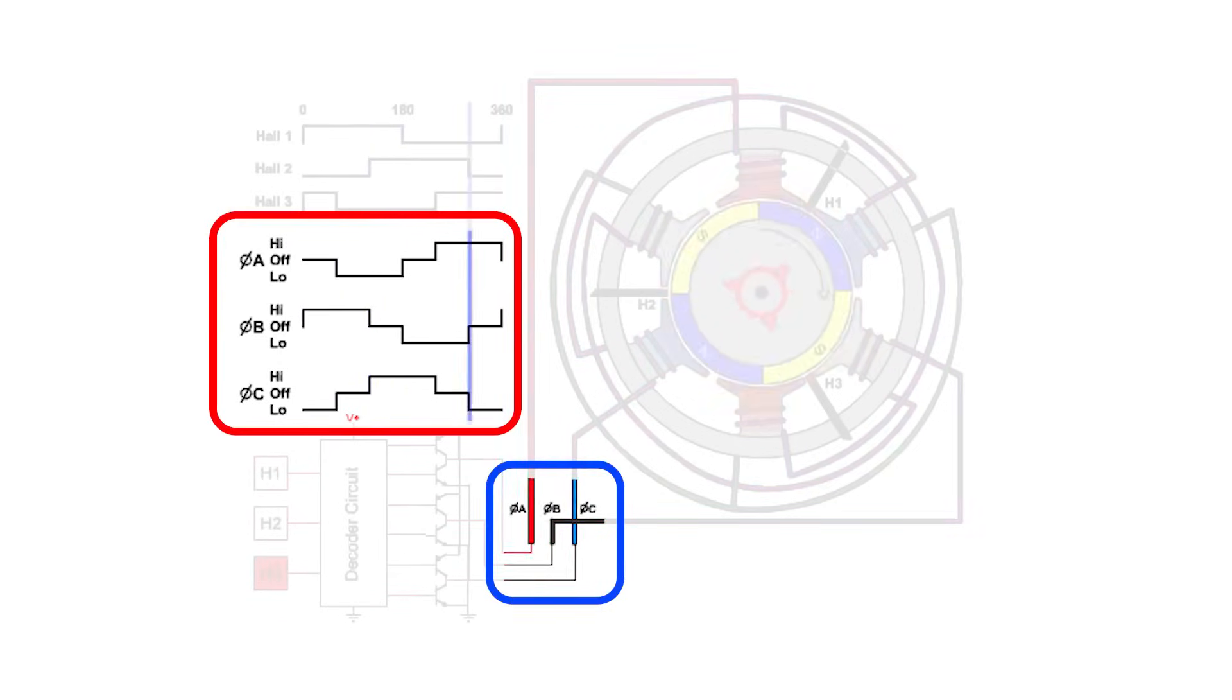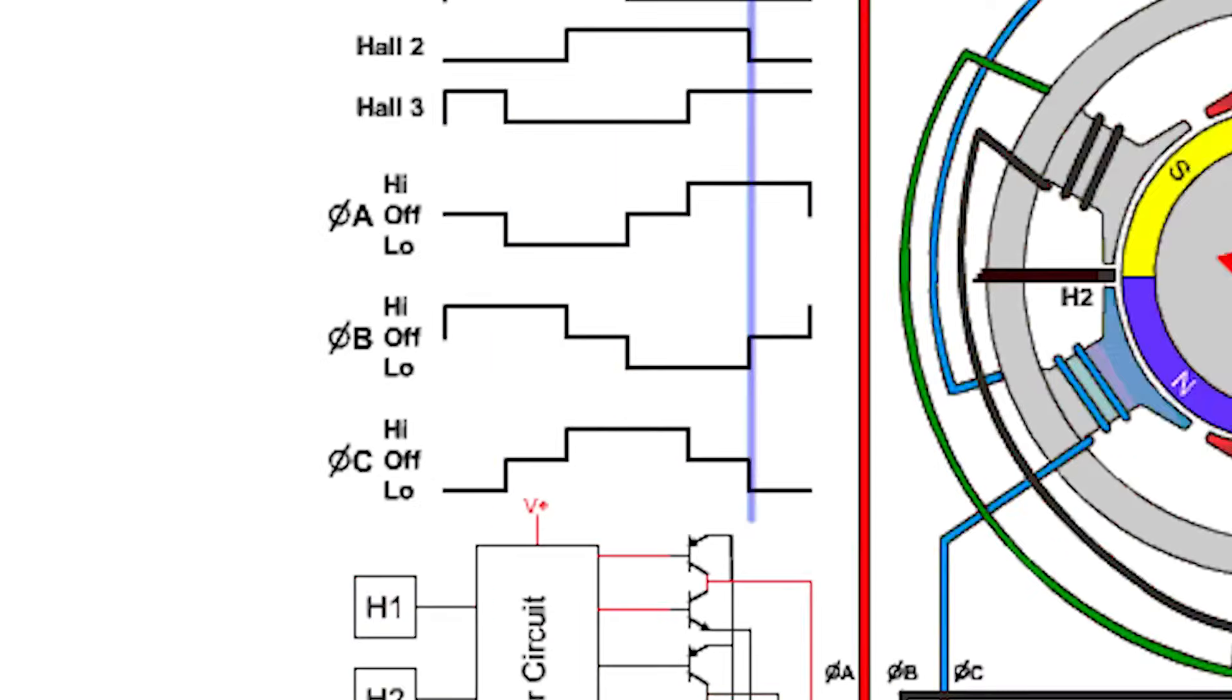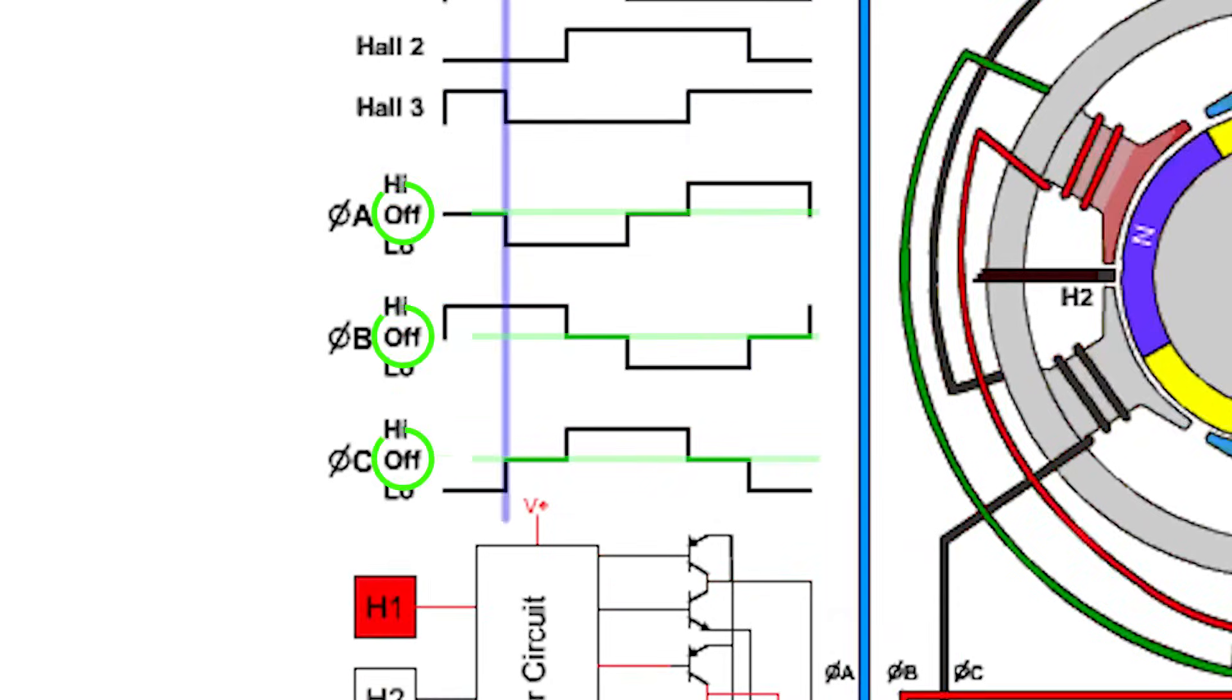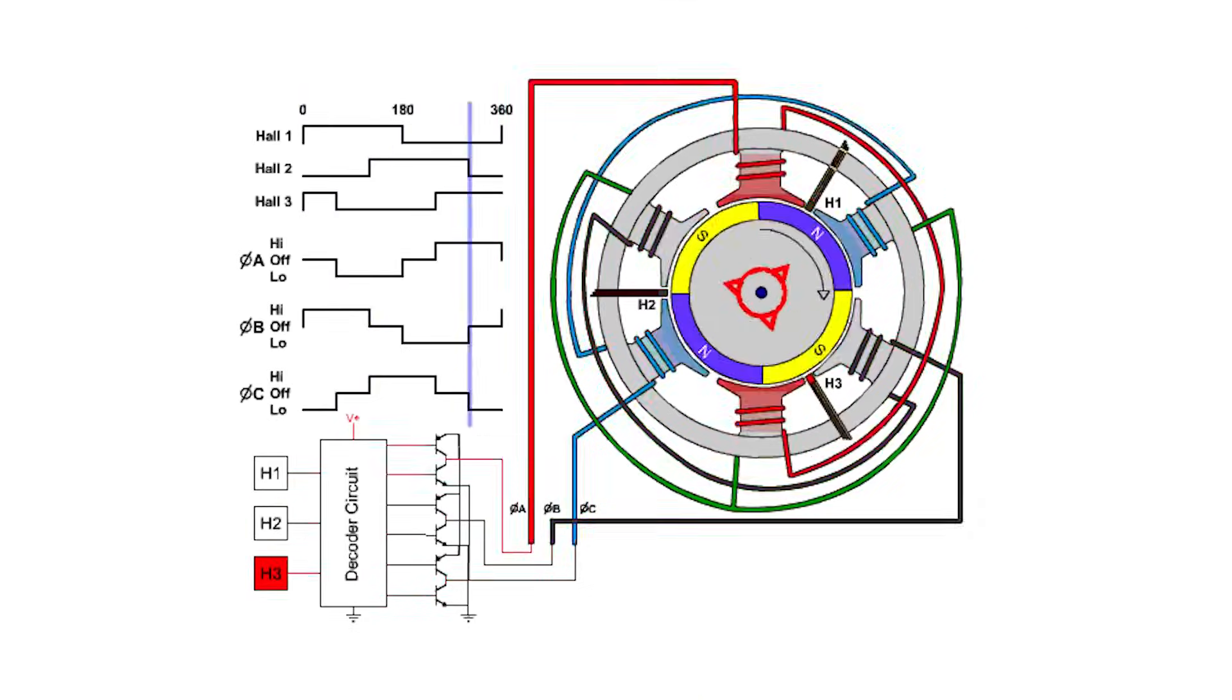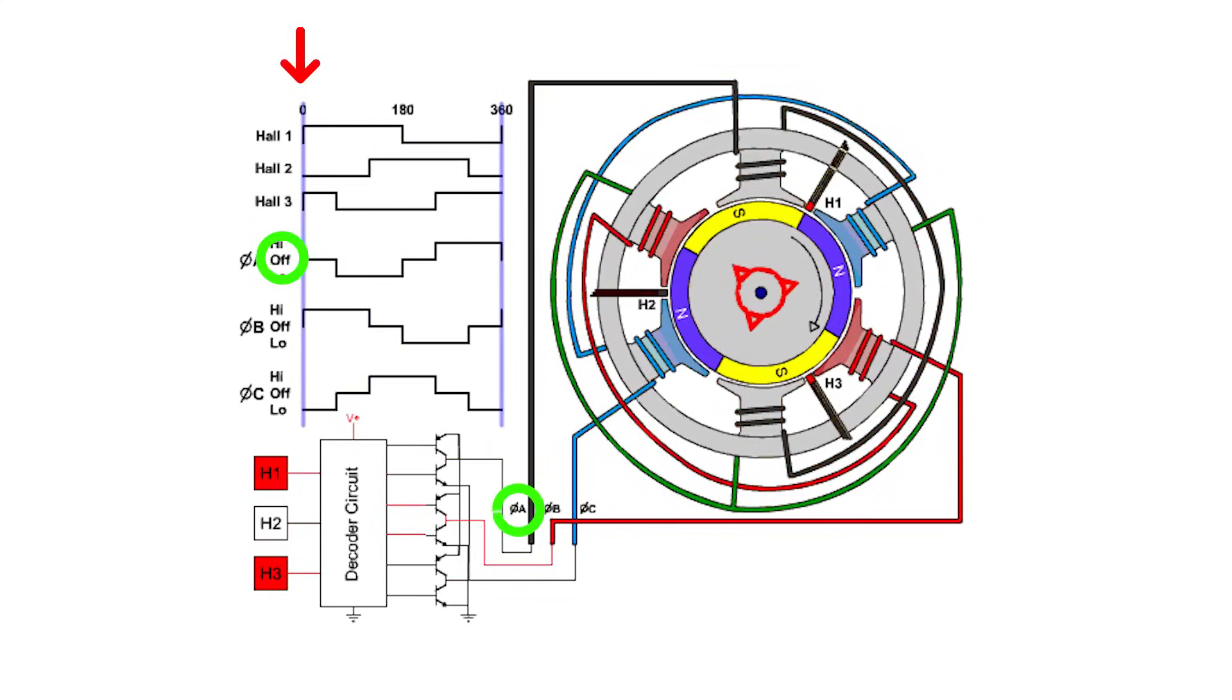Since a motor has three contacts, we have three diagrams. Each diagram shows a graph where, when it's up, the contact is supplied with a positive. In the middle, it is off and downwards, it is supplied with the negative from the power supply. This way, each contact has a connection stage. When the first contact is off, the second is being supplied with the positive, and the third is connected to the negative.